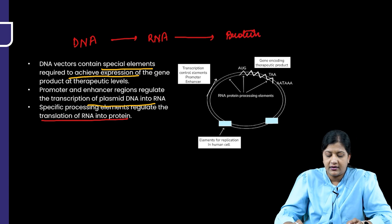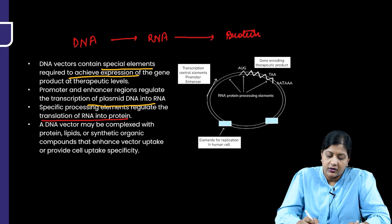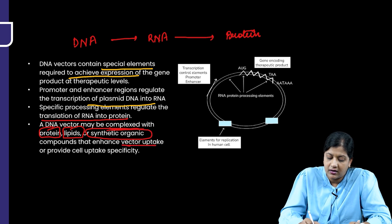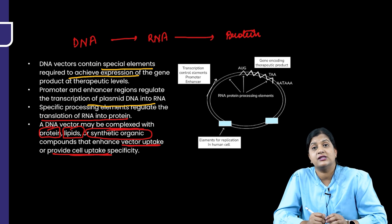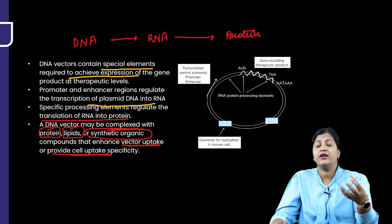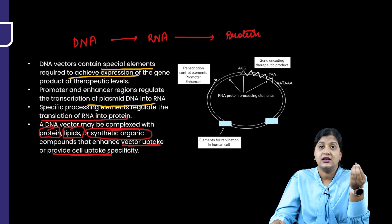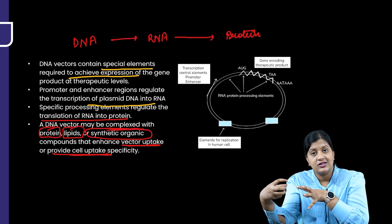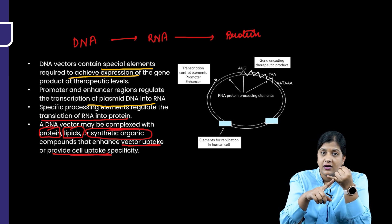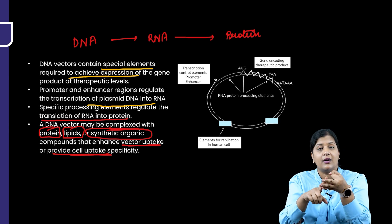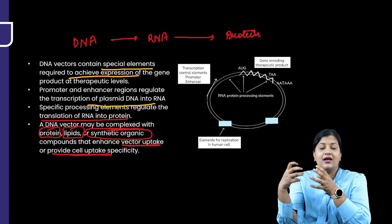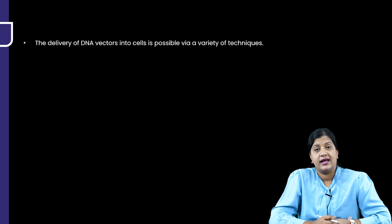The DNA vector may be complexed with a protein, a lipid, or a synthetic organic compound to enhance vector uptake and provide cell uptake specificity. Since it's unclear whether the DNA will target the correct cell, combining it with a protein, lipid, or synthetic organic material allows easy and selective entry of the DNA into the intended cell.